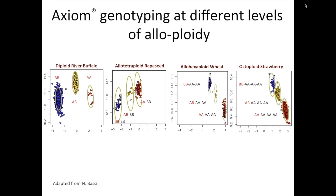This is an example of Axiom SNP allele calling for different levels of allopolyploid. On the left, you can see SNP clustering for diploid, then allotetraploid rapeseed, further to the right allohexaploid wheat, and then octoploid strawberry. As we increase in ploidy level, the clusters become closer together. But yet for high-quality SNPs, we can cluster BB, AB, and AA — basically homozygous, heterozygous, and the other homozygous class of genotypes — pretty well using this approach.